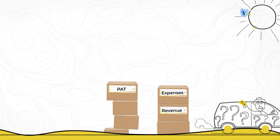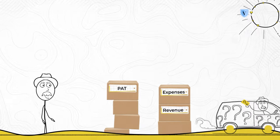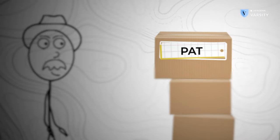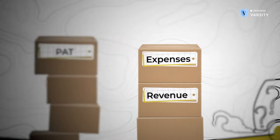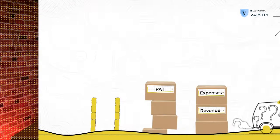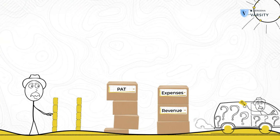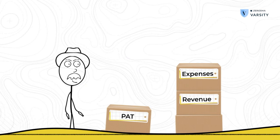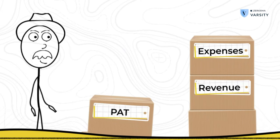One mistake that most investors make is that they look at just the bottom line of the company — they pay attention only to the PAT and ignore the rest of the P&L. The top line and the expenses are as important as the bottom line. Pay equal attention to all parts of the P&L.